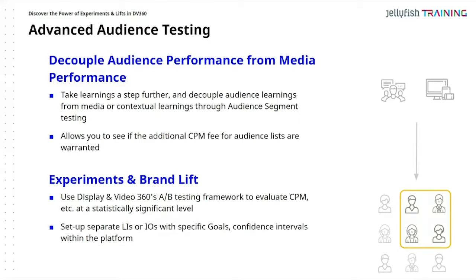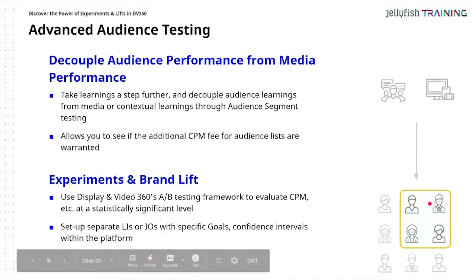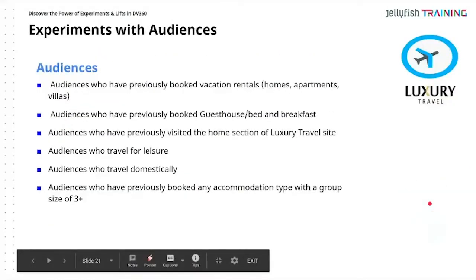Rather than just saying 'I think this works well,' we give really specific numbers for why something works better than another — we see changes with numbers. Sometimes a client or you yourself are unsure of a strategy and you can really test it. You can use the DV360 A/B testing framework to evaluate different criteria and provide statistically significant suggestions with high confidence levels — for example, saying you're 95% confident that this works best.